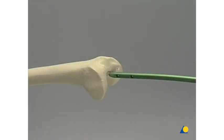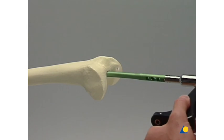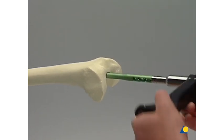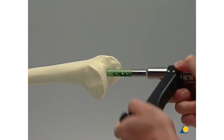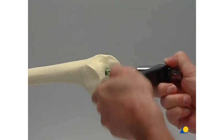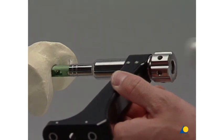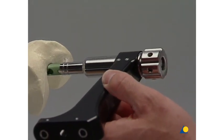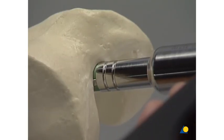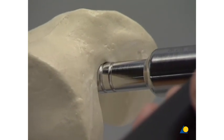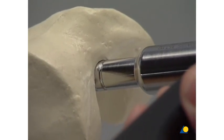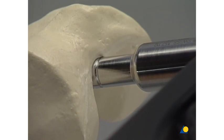The nail is inserted by hand through the entry point and with gentle rotary movements into the canal. Sometimes light hammer blows are required to insert the nail. The final position of the distal end of the nail should be 2 to 5 mm beyond the articular cartilage. The insertion depth can be read from the ring marks on the insertion handle.